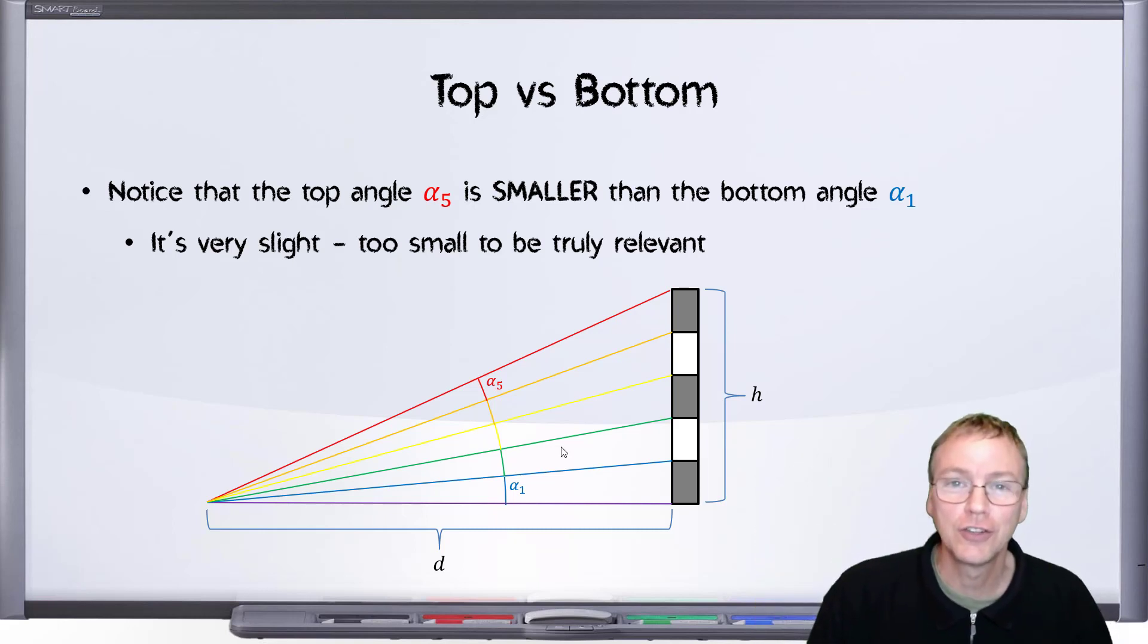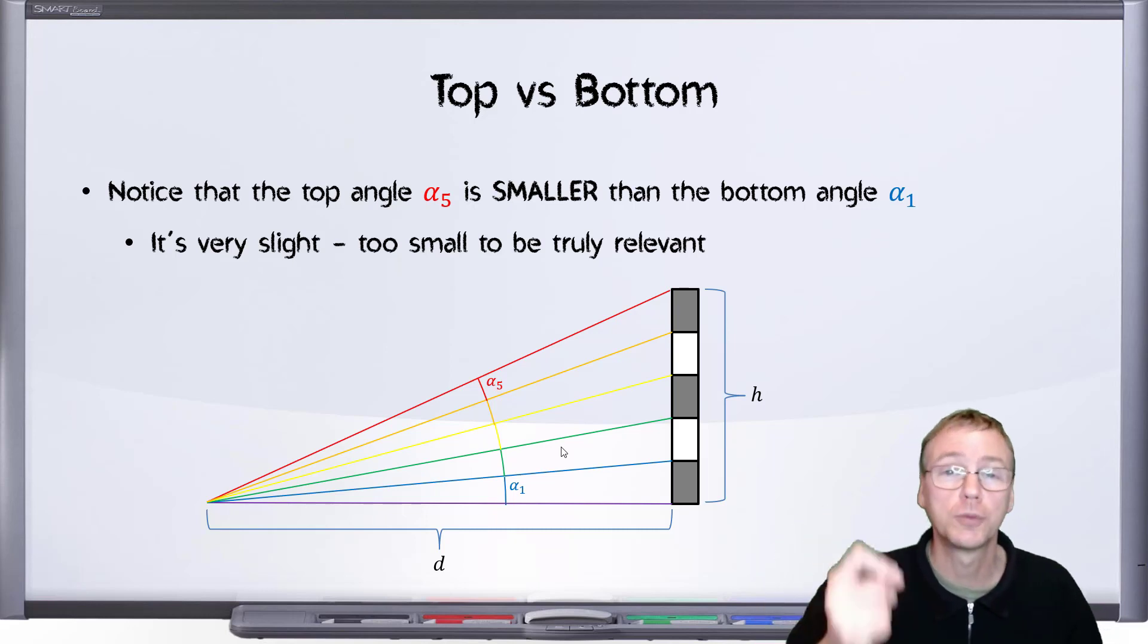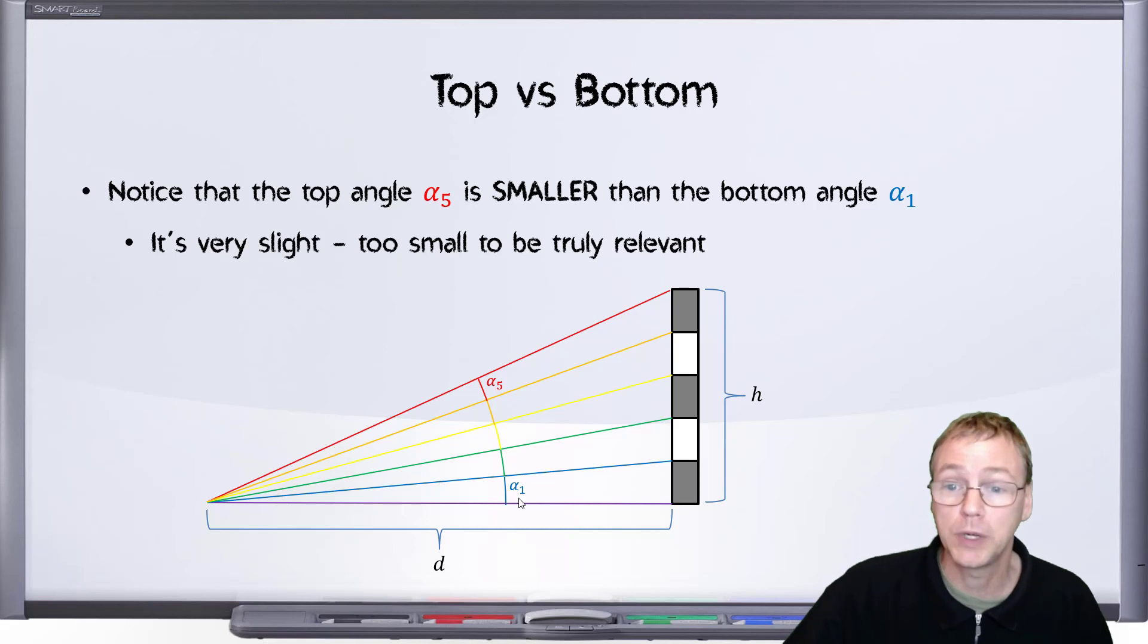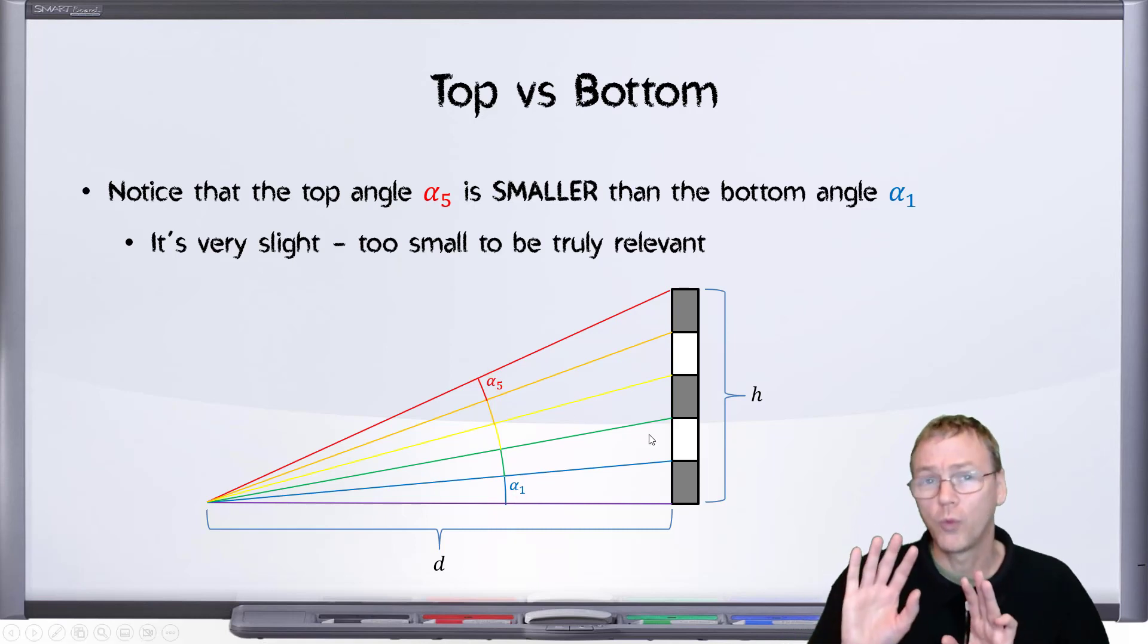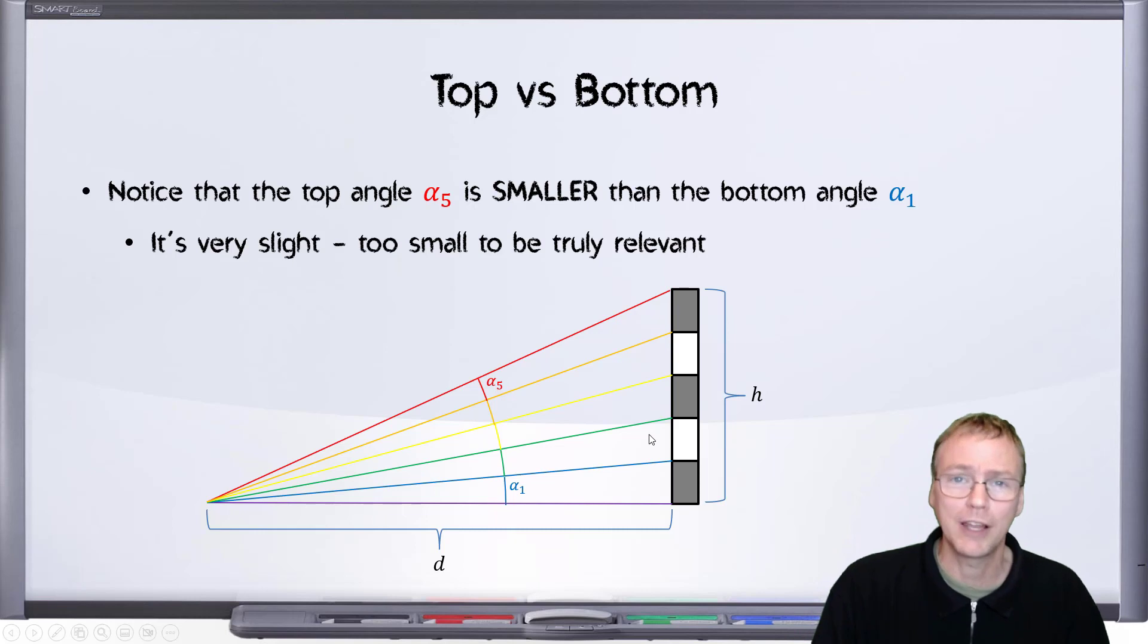At the distances where these angles are so small as to be near the Rayleigh Criterion, the difference between alpha 1 and alpha 5 is way too small to be relevant to the conversation anymore. Those angles are both so tiny that they become indistinguishable from each other at those distances. And that tells us conclusively that the Rayleigh Criterion is not responsible for blurring out the bottom of an object before the top of the same object.